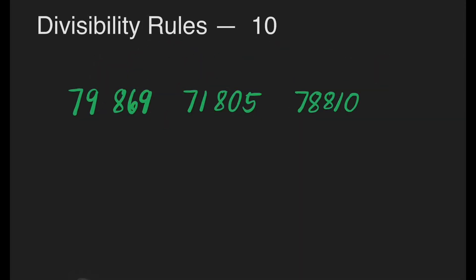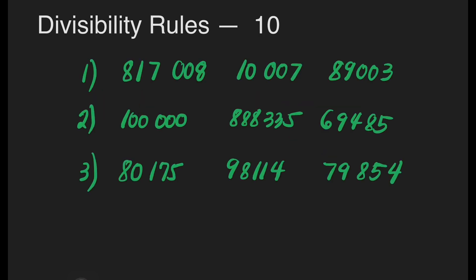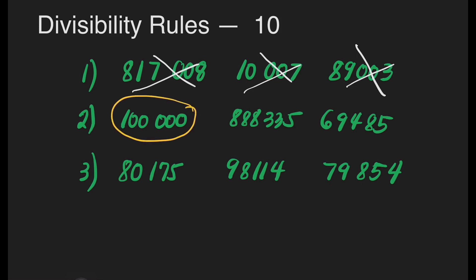We have the divisibility rule for 10. Which of these numbers is divisible by 10? Definitely, the answer is the last number, 78,810, because a number that is divisible by 10 ends with 0. The first two numbers are not divisible by 10. For the exercises — number 1: none of the three numbers is divisible by 10. For number 2: 100,000 is divisible by 10, and the rest are not. For number 3: none are divisible by 10. Again, a number divisible by 10 ends with 0.